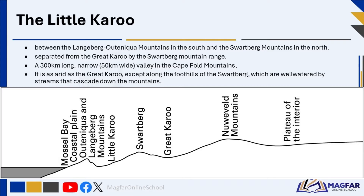Regions in South Africa are separated by their distinct geographical features such as elevation, climate, and natural vegetation.